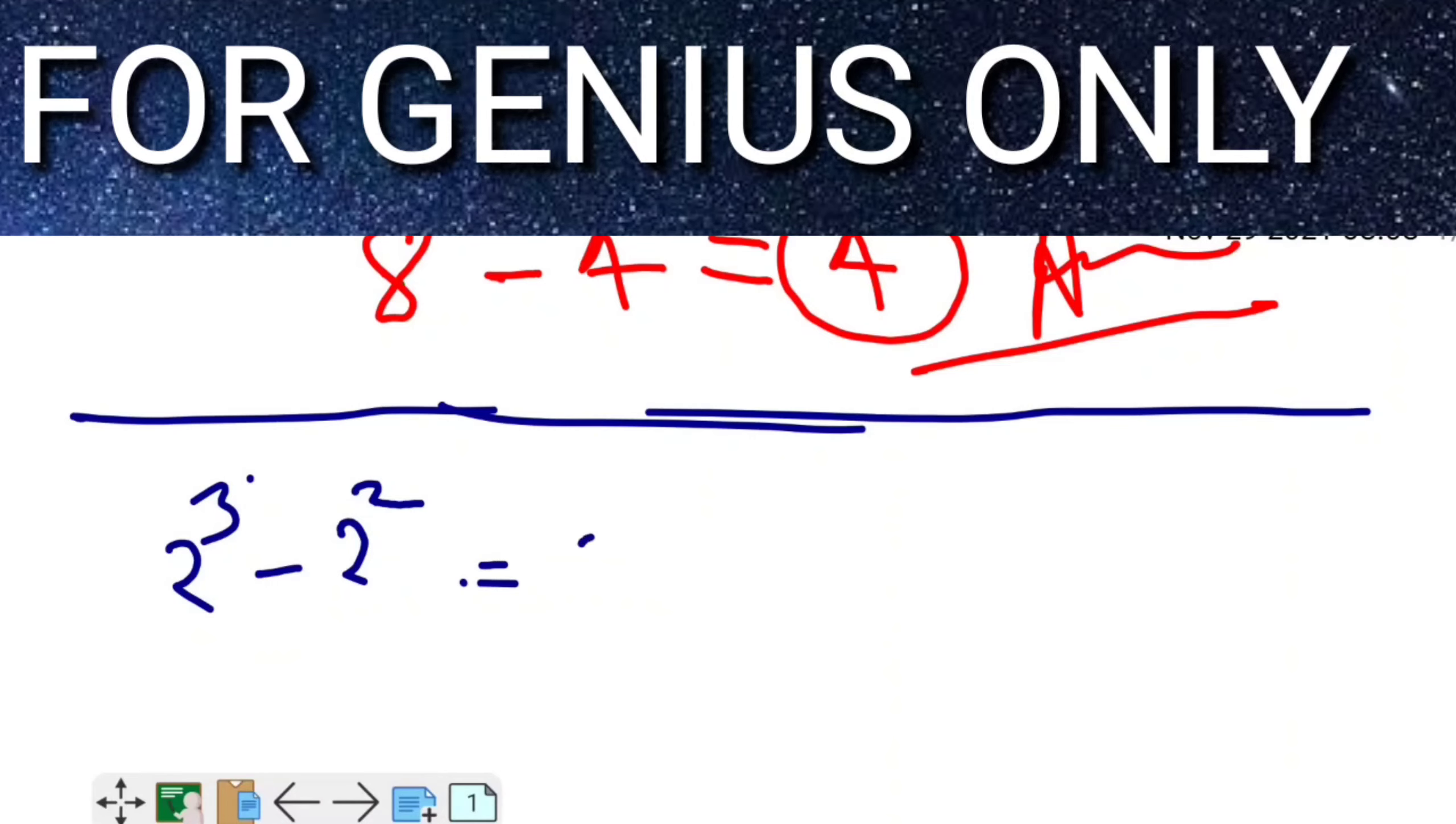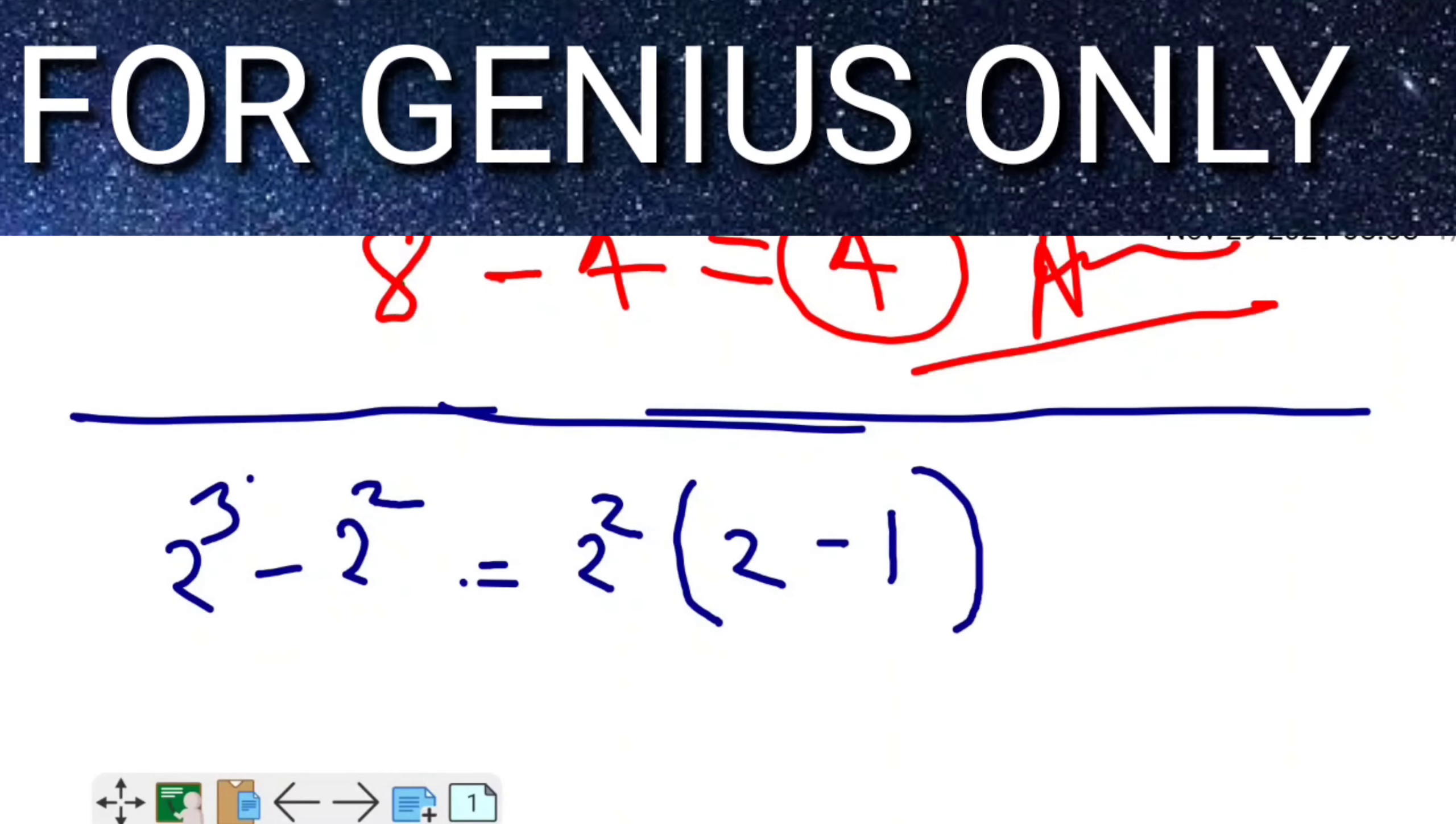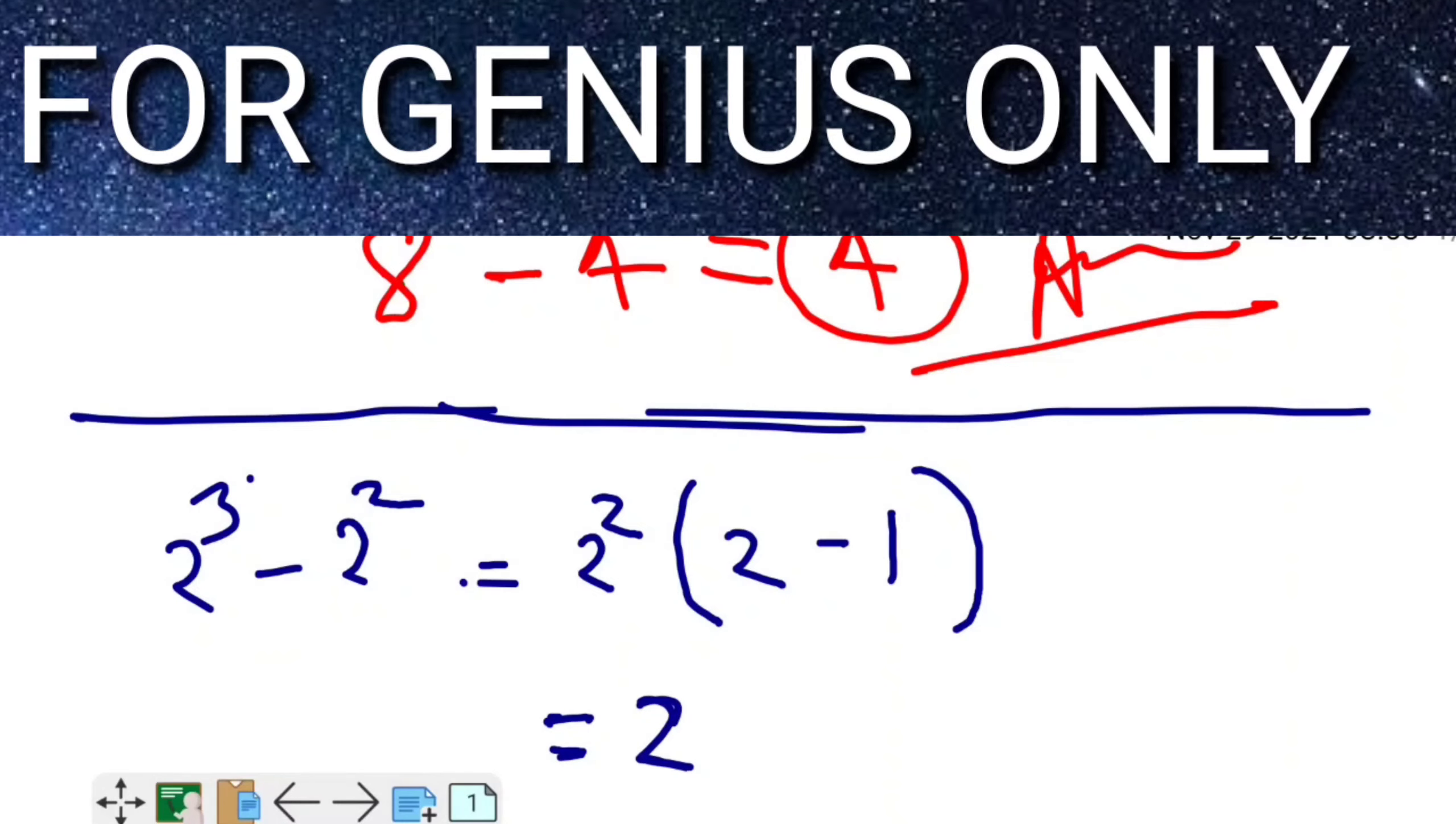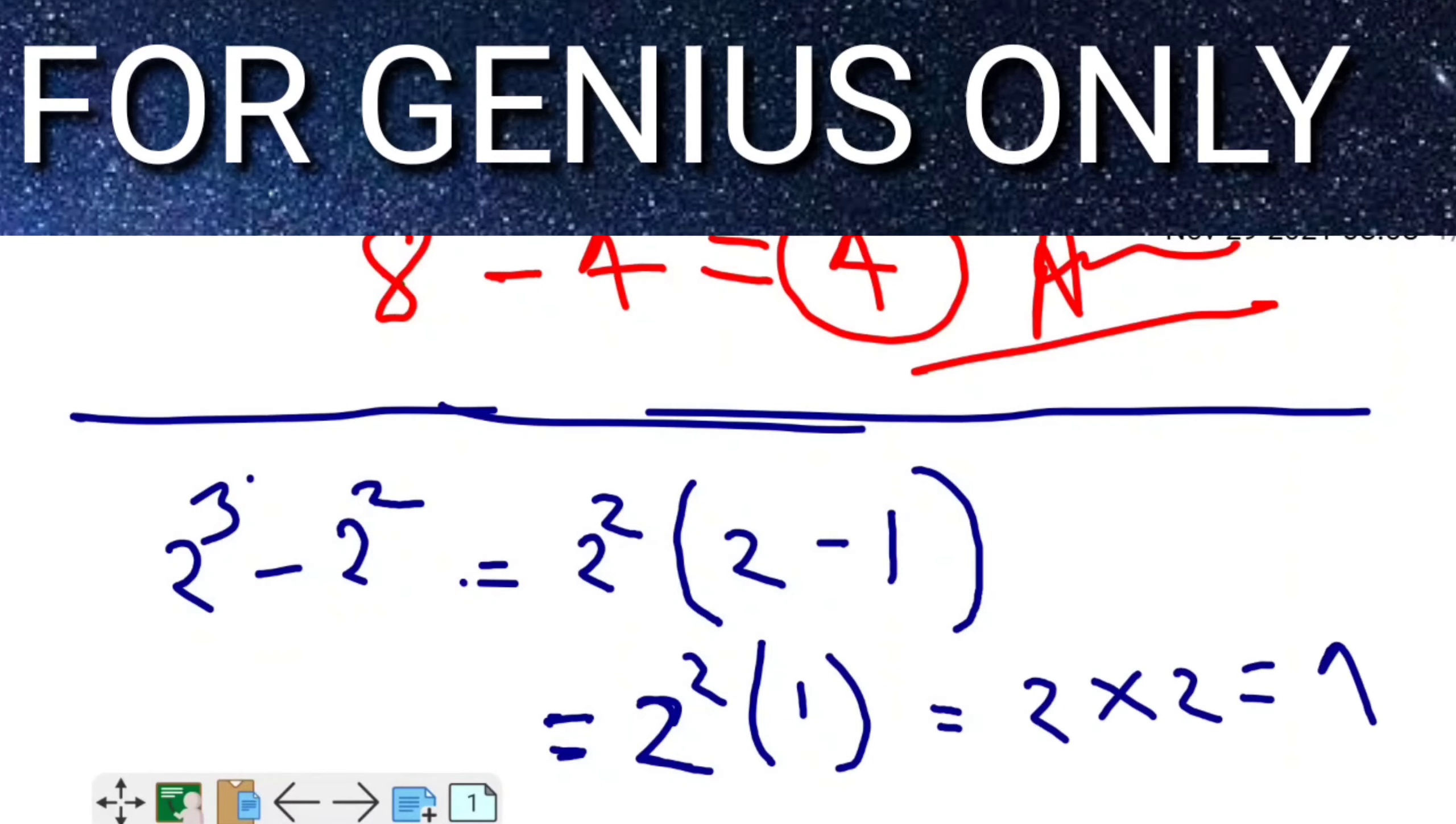What will come? I will factor out 2², and what remains is 2 minus 1. You're finding 2² times (2 - 1), which equals 2² times 1, which means 2 × 2 equals 4.